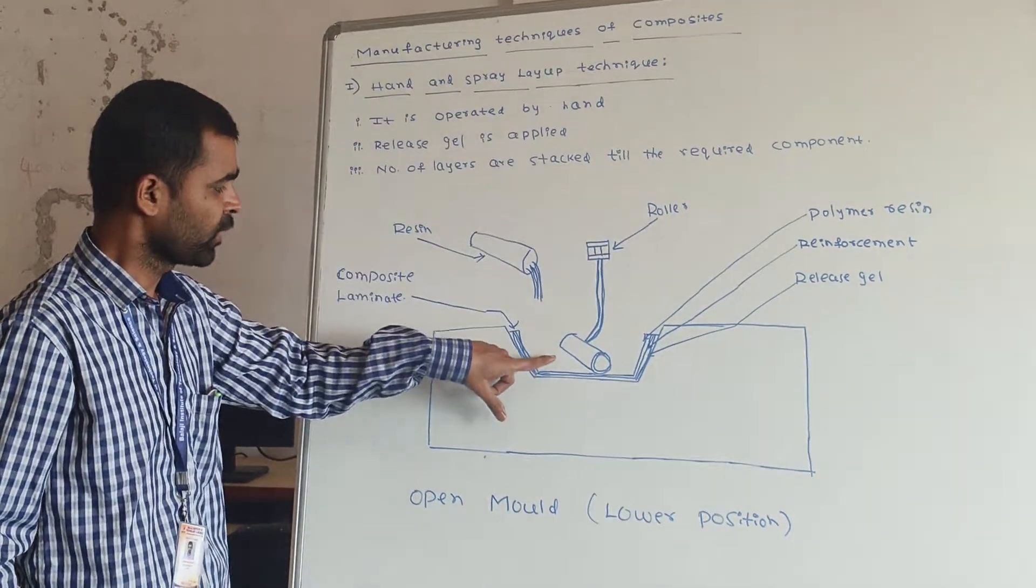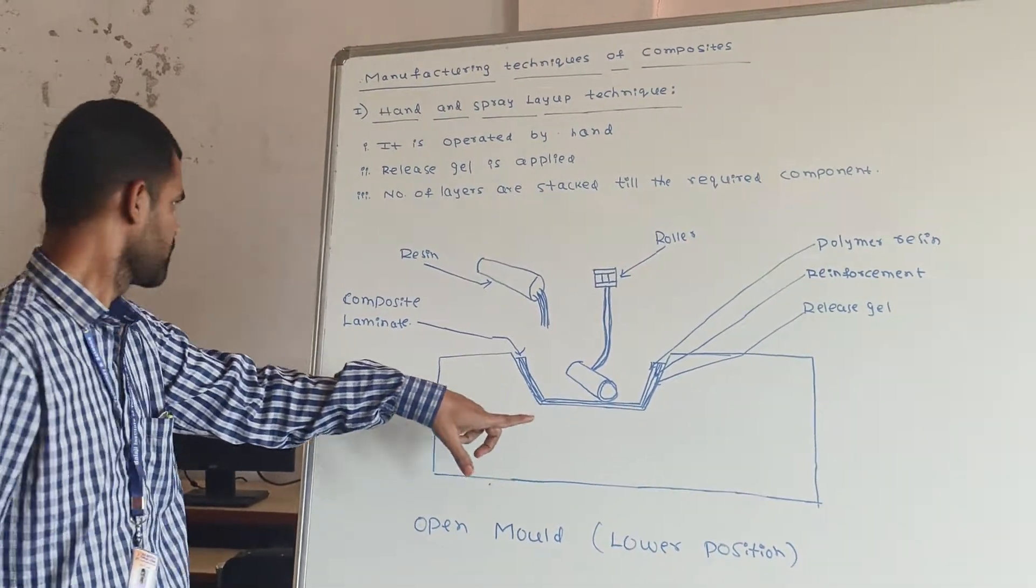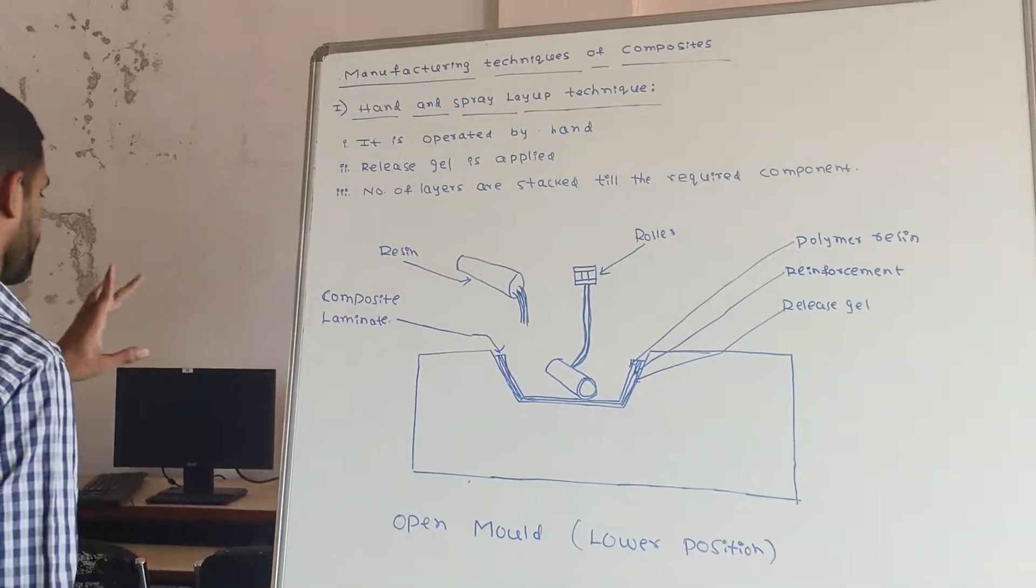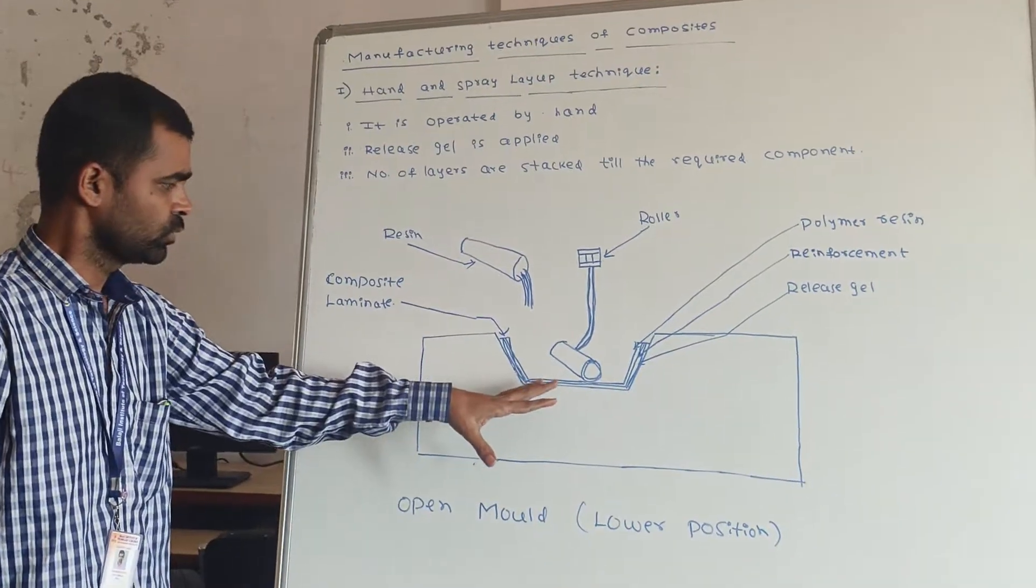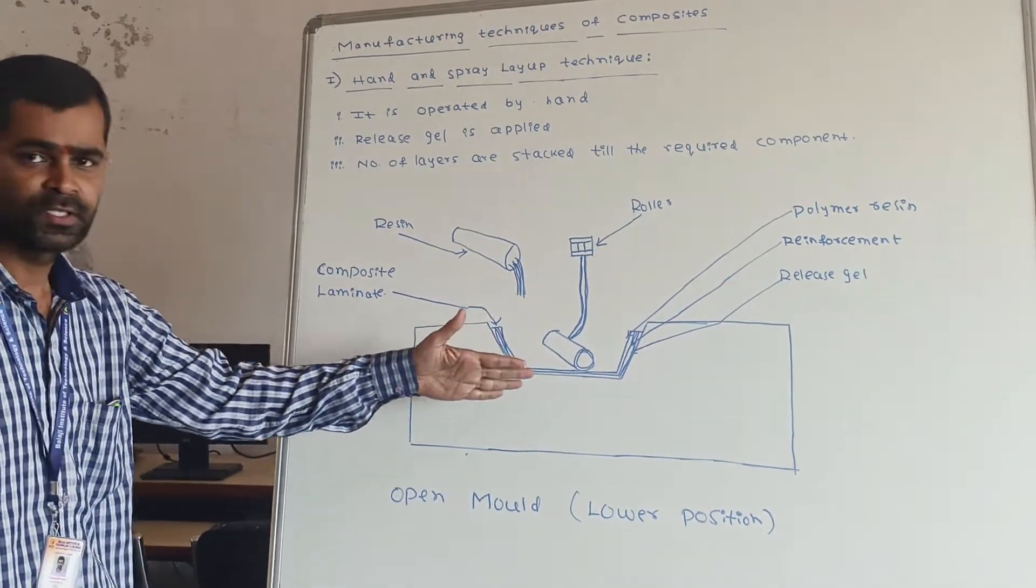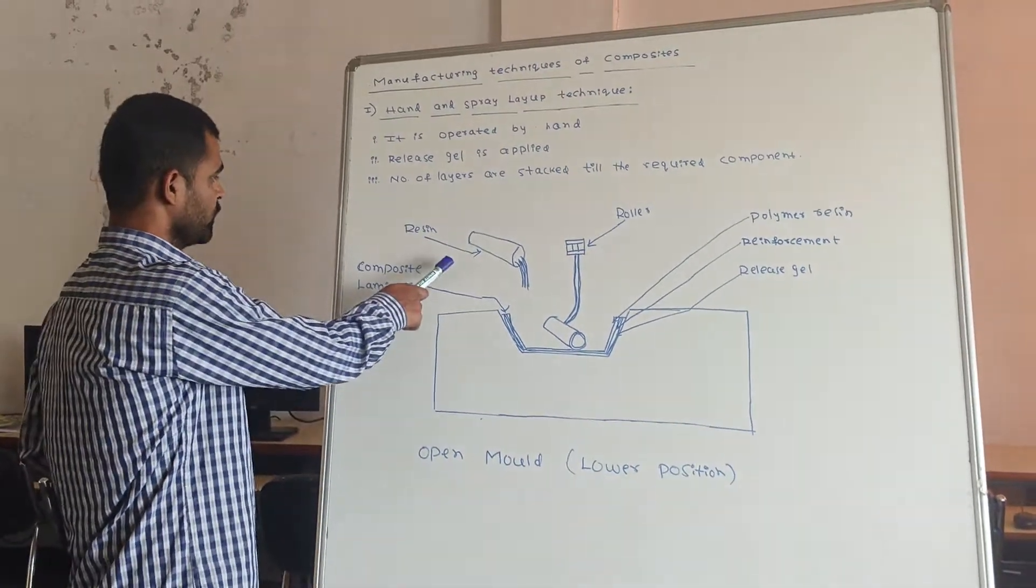And the roller is applied on the resin so that air trapped in the composite may be released, may be removed. This is the resin.